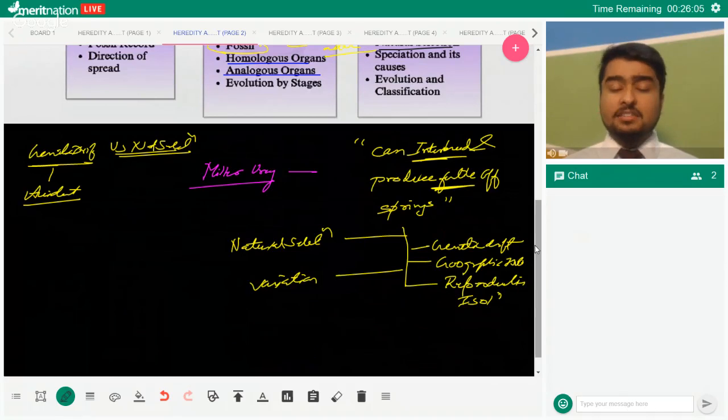Homologous organs - if you examine the forelimbs of the tetrapods, a cat's forelimbs are its feet, a human's forelimbs are its hands, a whale's forelimbs are its flippers. But they all have diverged over time so that they can adapt to their specific environments. So those are homologous organs because they all have the same ancestor.